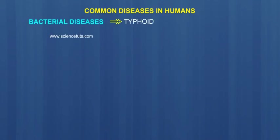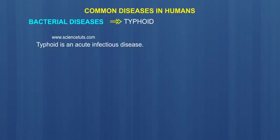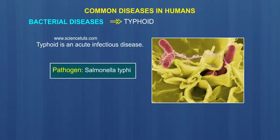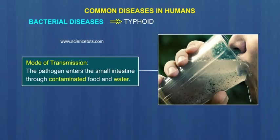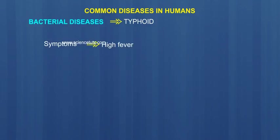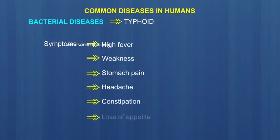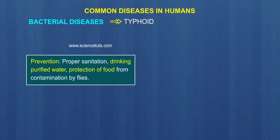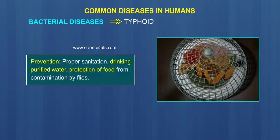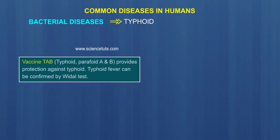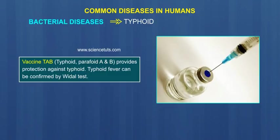Bacterial Diseases. Typhoid is an acute infectious disease. Pathogen: Salmonella Typhi. Mode of Transmission: the pathogen enters the small intestine through contaminated food and water. Symptoms include high fever, weakness, stomach pain, headache, constipation, and loss of appetite. Prevention includes proper sanitation, drinking purified water, and protection of food from contamination by flies. Vaccine TAB (Typhoid Paratyphoid A and B) provides protection against typhoid.